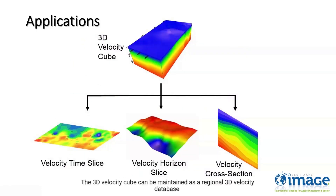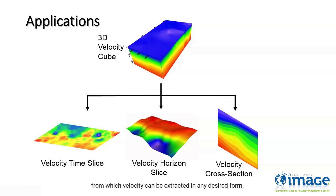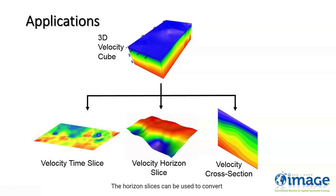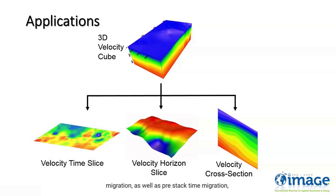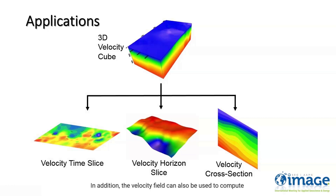The 3D velocity cube can be maintained as a regional 3D velocity database from which velocity can be extracted in any desired form. This includes velocity time slices, horizon slices, and cross sections. The horizon slices can be used to convert time grids into depth grids. Similarly, the velocity cross sections can be used in NMO corrections, migration, as well as pre-stack time migration and depth migration. In addition, the velocity field can also be used to compute other parameters such as pre-drill pressure regimes.